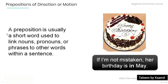Remember that a preposition is usually a short word used to link nouns, pronouns, or phrases to other words within a sentence. Have a look at the example below: 'If I'm not mistaken, her birthday is in May.' Note that the preposition 'in' in this sentence is used to link the noun 'May' to 'birthday' — her birthday.